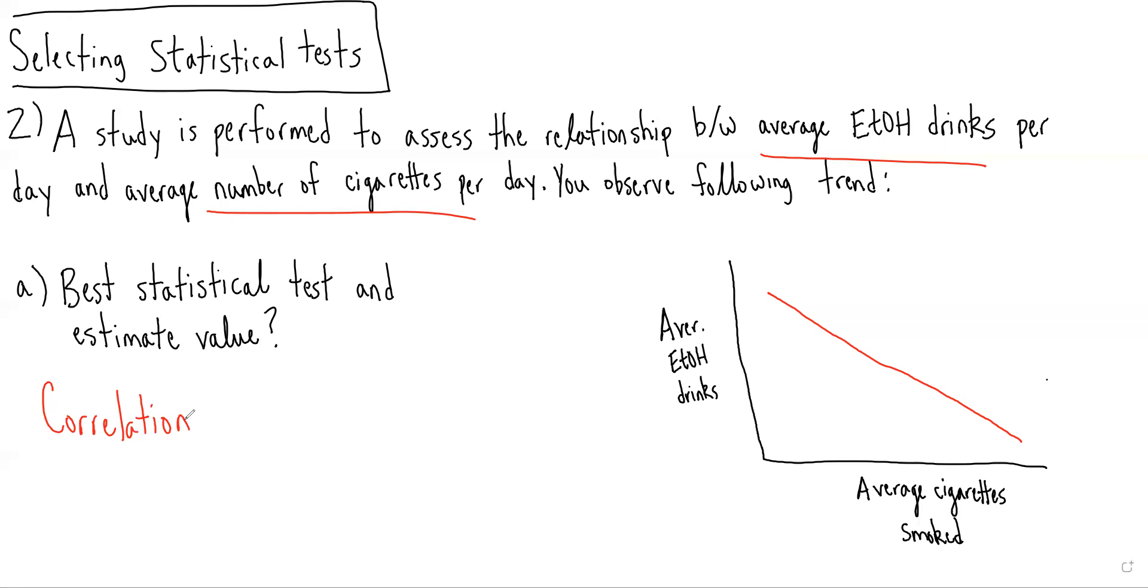And in this case, given this trend where as average number of cigarettes smoked per day goes up as we move to the right, average number of alcoholic drinks per day goes down, decreases, we would say that is a negative relationship. So we know it's going to be a negative value.